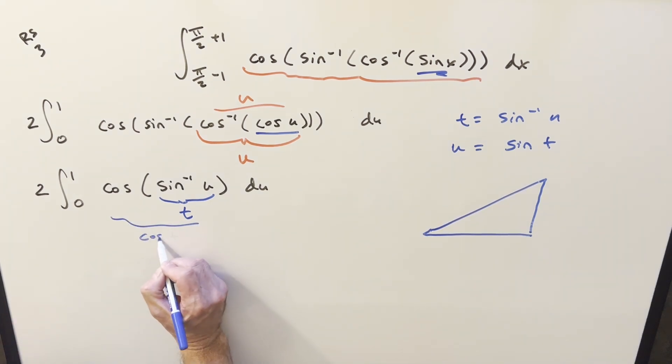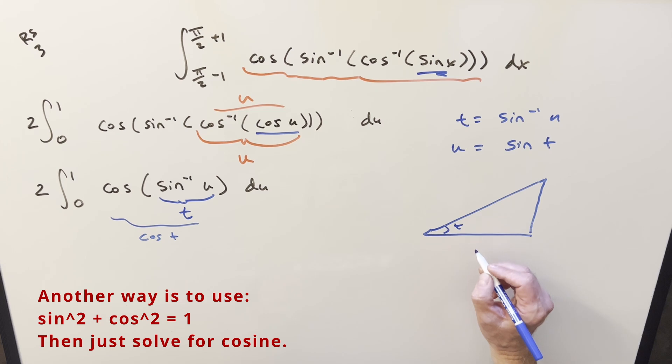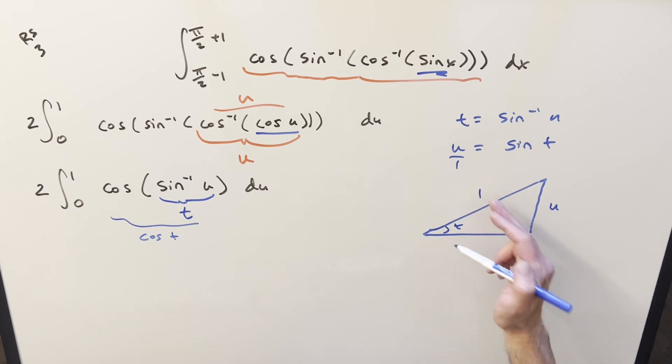And what we're going to want here, this whole expression is cosine of t. So you kind of just remember this, but let's do the triangle really quick. So for sine of t, I can write it as u over 1. Sine is going to be opposite over hypotenuse. So we can write u, 1 for the hypotenuse.